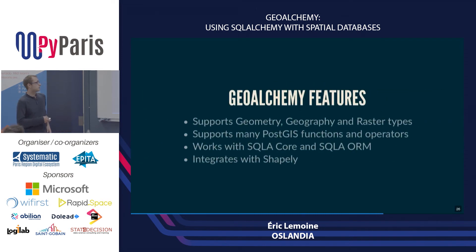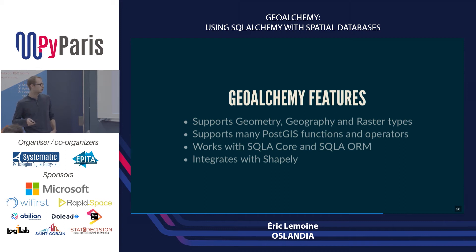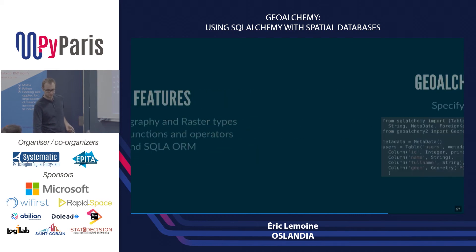GeoAlchemy features: it supports geometry, geography, and raster types — all the types supported by PostGIS. It supports many, if not all, PostGIS functions and operators. It works with SQLAlchemy Core and SQLAlchemy ORM, and it integrates well with other libraries.